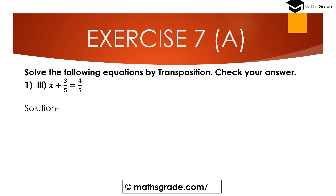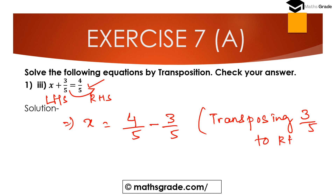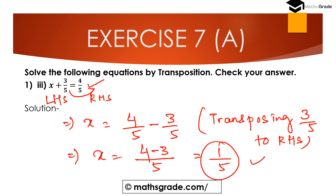Question number three: x plus 3/5 equal to 4/5. Here x plus 3/5 is on the left-hand side and 4/5 is on the right-hand side. Transposing 3/5 to the right-hand side, plus changes to minus. So x equals 4/5 minus 3/5. The LCM is 5, and 4 minus 3 is 1, so x equal to 1/5.